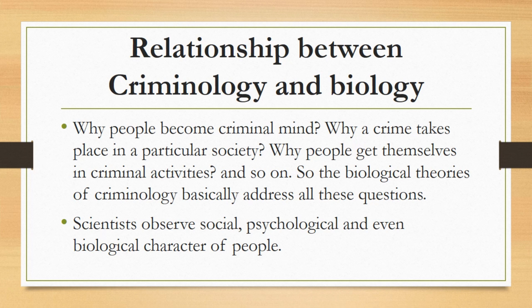The Biological Theories of Criminology basically address all these questions. Social scientists observe societies through various lenses when they try to understand criminals. They observe the social, psychological, and even biological character of people. When it comes to the biological perspective, social scientists biologically examine the criminals. They discuss biological characteristics of criminals, like how a criminal minded man is looking — his face, eyes, nose, lips, etc. In short, scientists do a complete biological examination of a criminal. In this way, criminology and biology are interlinked.